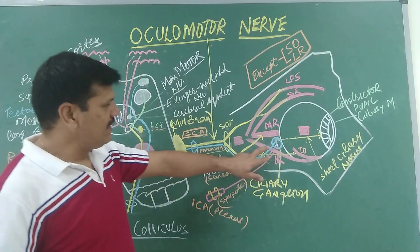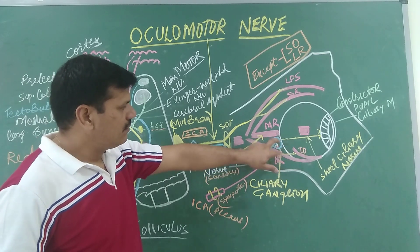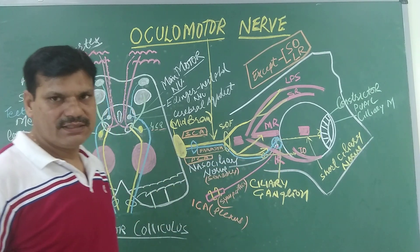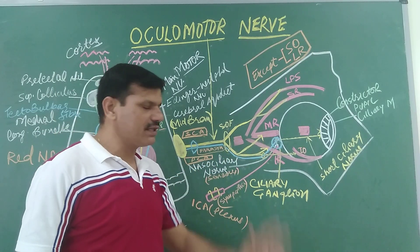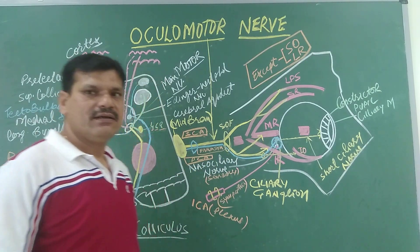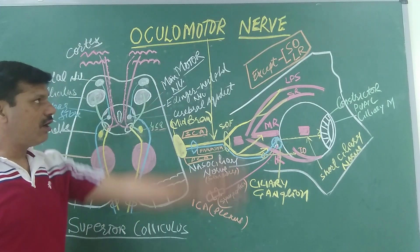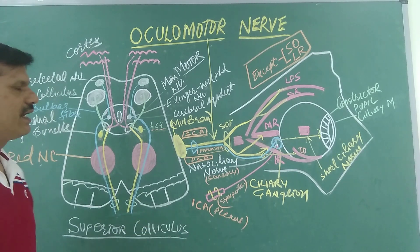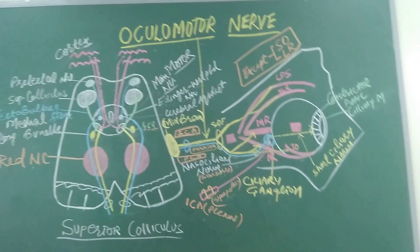The ciliary ganglion lies medial to the eye, between the optic nerve and the lateral rectus muscle. This concludes the discussion of the ciliary ganglion and the oculomotor nerve.